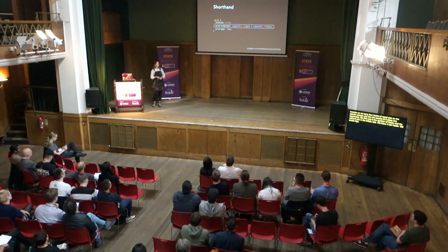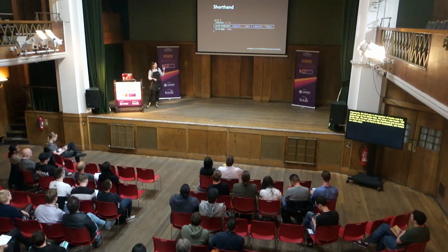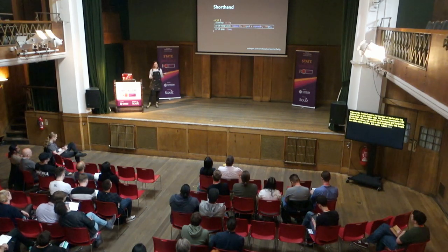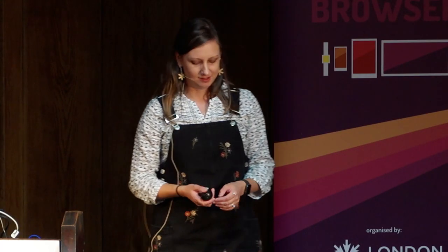We can also use the shorthand grid-template, which is fine to use here since our declaration is fairly short — it keeps our code more concise. Personally, I find it's easier to keep grid-template-rows and grid-template-columns separate because grid declarations can get quite long and wordy. We can also use grid-gap as the shorthand for grid-row-gap and grid-column-gap. In this case, because it's the same in both directions, I can just specify a single value of 20 pixels.